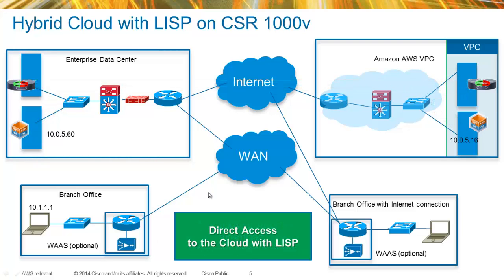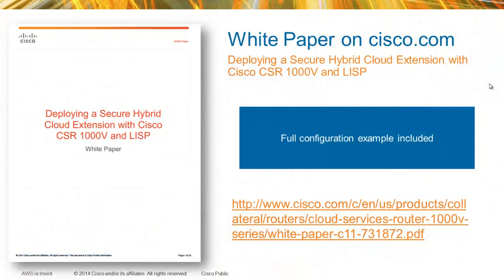This demonstrates that CSR1000V together with LISP is capable of providing a hybrid cloud extension solution where the same subnet is present on the enterprise as well as on AWS. VMs existed on both the cloud and the enterprise within the same subnet. It's not covered in this demo, but if you had LISP deployed on the branch office, the branch office could communicate directly with the cloud. For more information and the full configuration of this demo, please refer to the white paper on Cisco.com. Thank you.